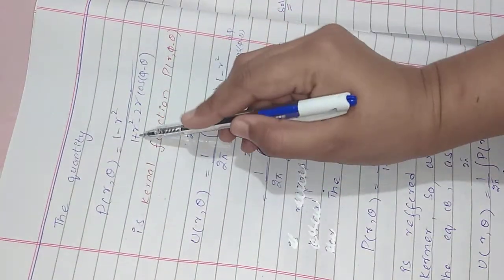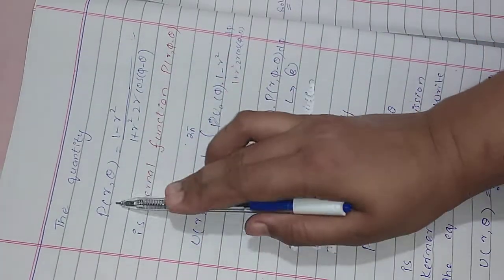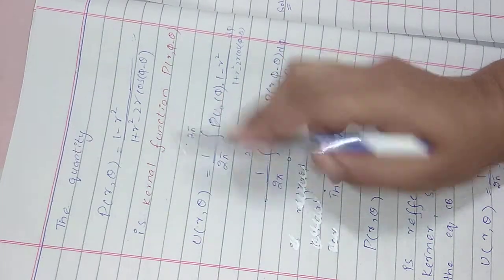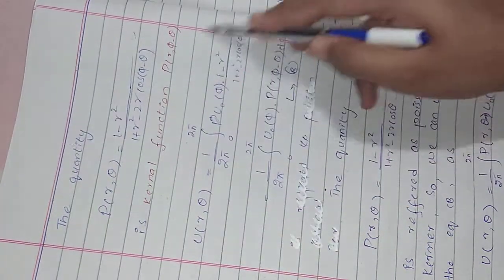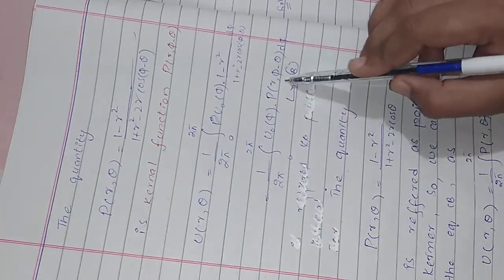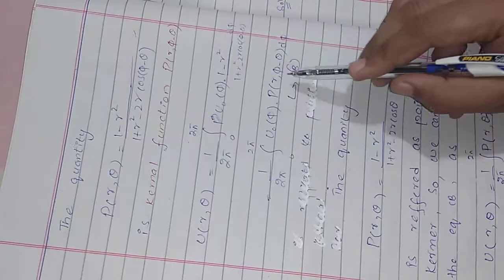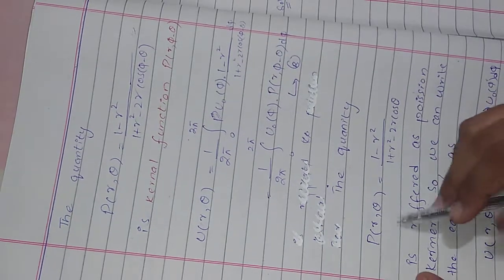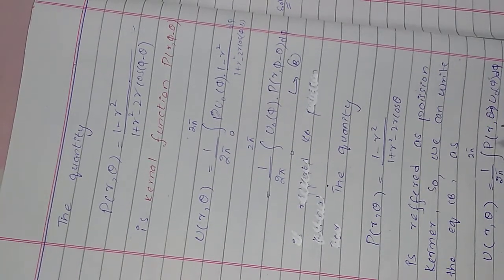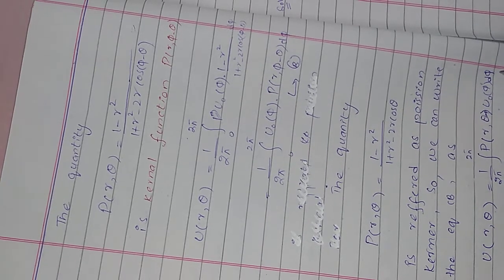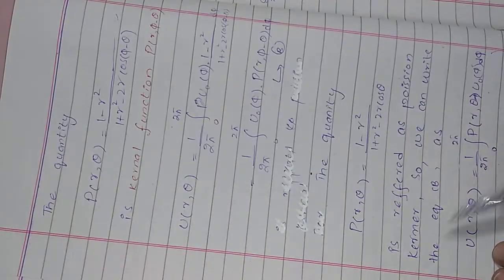The quantity (1 − r²)/(1 + r² − 2r cos(φ − θ)) is denoted P(r, θ) and is called the Poisson kernel. We can write the equation as u(r, θ) = (1/2π) ∫₀^(2π) P(r, φ − θ) · u₀(φ) dφ. This completes the description of the Poisson kernel formula using the Dirichlet problem along a circle.